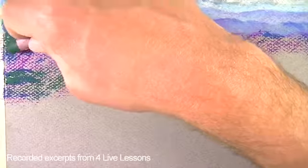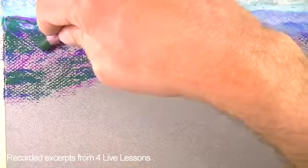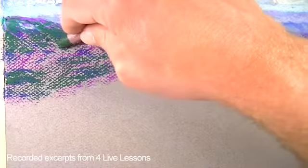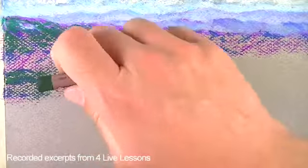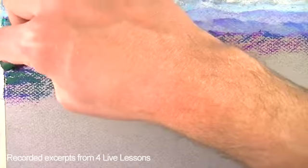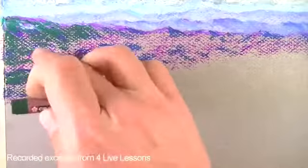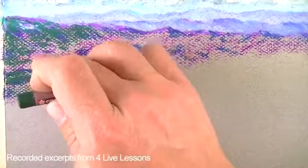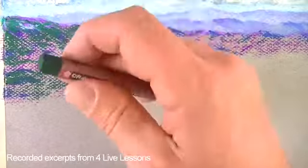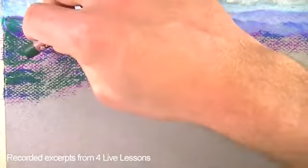We can also build up applications, just like we can build up applications with colored pencils, where we get to a point where the binder is really present on the surface and we get some burnishing happening. Same thing kind of happens with oil pastels. You've got this stage here where the tooth of the paper is really strong, and then when you layer enough to cover up the tooth of the paper, the surface becomes really buttery.